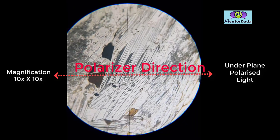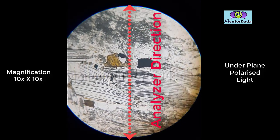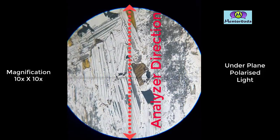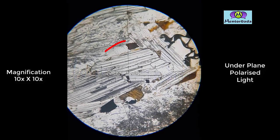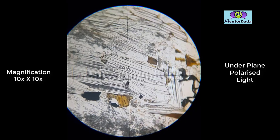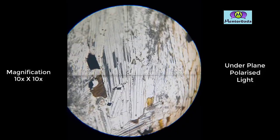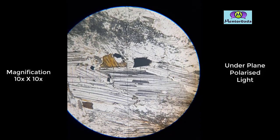This is another mineral under plane polarized light. Here the mineral is showing non-pleochroic property. As we are rotating the stage, the color of the mineral is not changing, so the mineral is non-pleochroic.